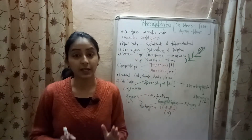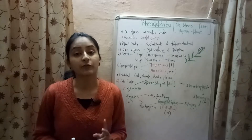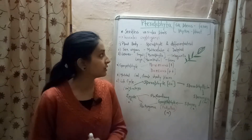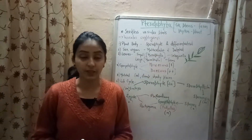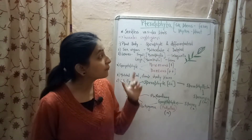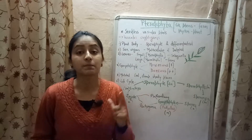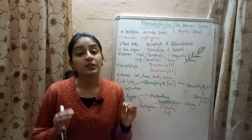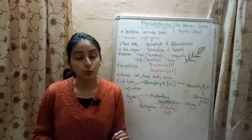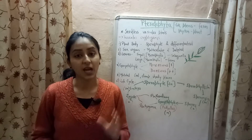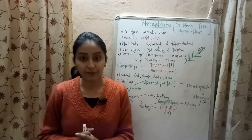Pteridophyta is derived from two Greek words: pteris, which means fern, and phyton, which means plant. So, division Pteridophyta includes fern plants.